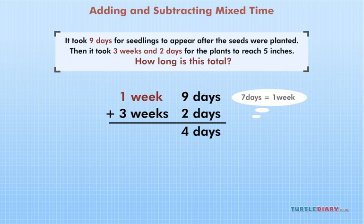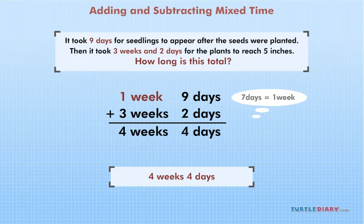And we'll finish by adding the weeks column. 1 week plus 3 weeks equals 4 weeks. Final answer, 4 weeks 4 days.